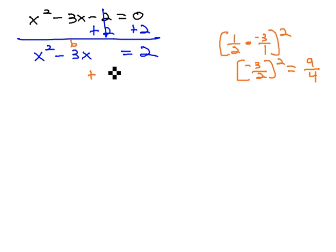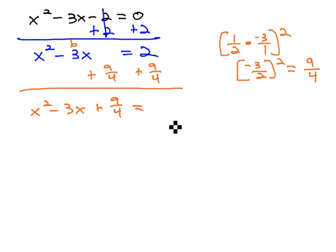And so we're going to add 9 fourths to both sides of this equation. The left side then is x squared minus 3x plus 9 fourths. On the right side, we're going to need some fractions. 2 plus 9 fourths. Well, we need a common denominator.